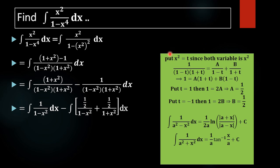And t equals x squared. So we are rearranging the term as one half over 1 minus t, that is one half over 1 minus x squared, and one half over 1 plus t, that is one half over 1 plus x squared. Now just integrating these terms we can find our answer. Before that, consider we have two terms: one half times 1 over 1 minus x squared dx, and one half times 1 over 1 plus x squared dx.